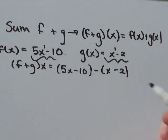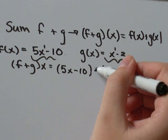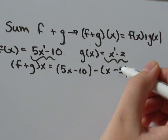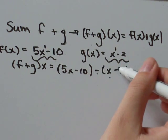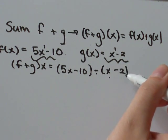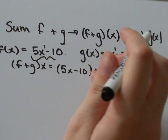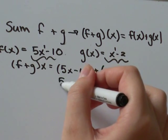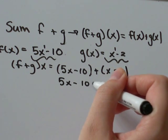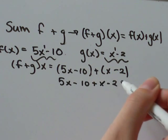If this was a negative sign between, if we were doing the difference of two functions, then the negative would have to be distributed into the brackets, and we would have 5x minus 10 minus x, negative times negative is positive plus 2. But it's not minus, it's plus.